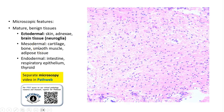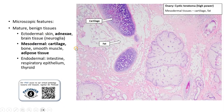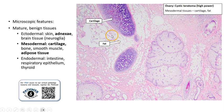It can also contain brain tissue. Very often, we can see neural glial tissue as part of the ectodermal layer. Here is an example showing mesodermal tissue, where we can see some islands of cartilage as well as some adipose tissue.